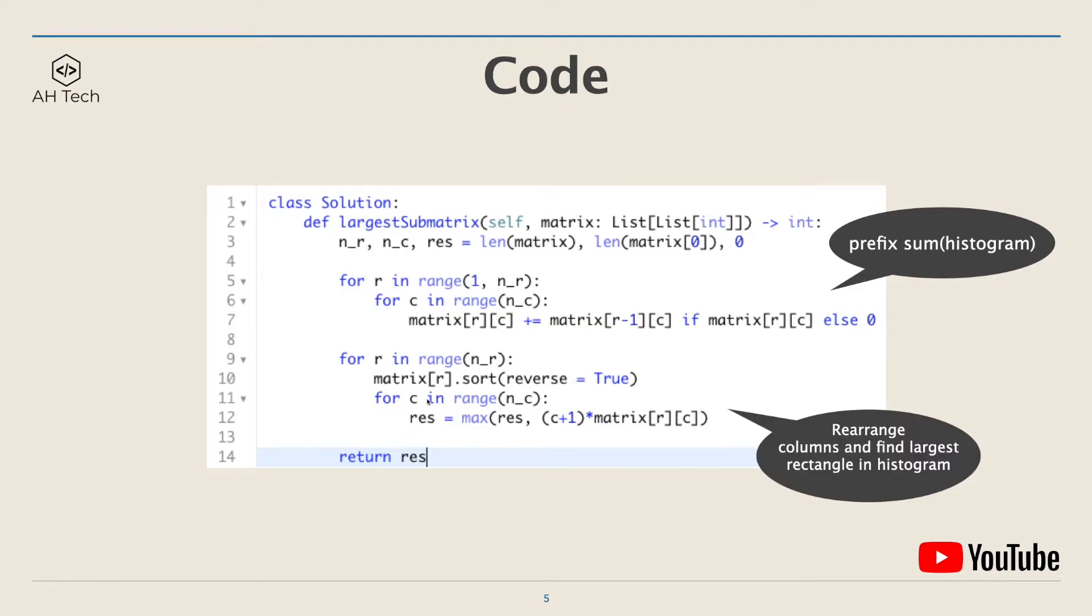And next, on every row, we will arrange the columns and find the largest rectangle in histogram. And rearranging is to reverse sort each row by descending order. And the area of the current sum matrix, its width is the current column index C plus 1. And its height is the height of the bar, the current bar of the histogram. And we will update rest accordingly.